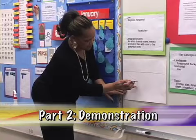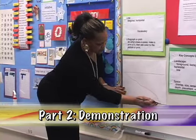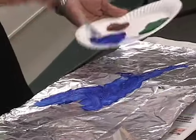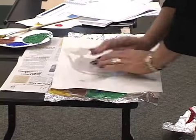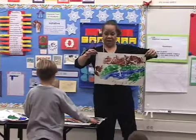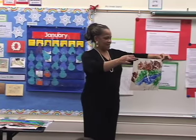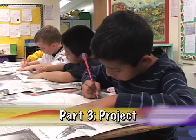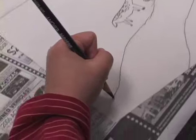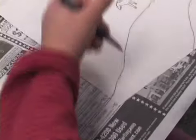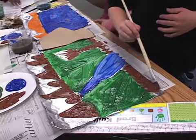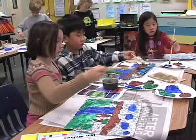Part 2 is the demonstration of specific media and art techniques. Students are encouraged to relate their insights of the masterpiece to the planning of their own art project. In Part 3, students then create their art project, inspired by the masterpiece. Their imagination takes them down roads of new discovery as they paint, sculpt, sketch, and color.